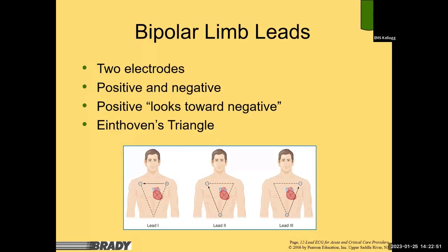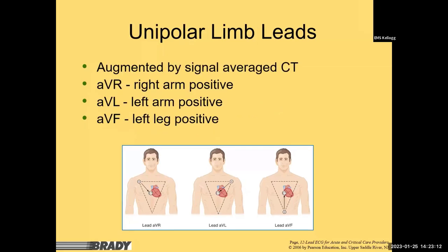If the heart's electrical conduction system is traveling towards a positive lead — towards the camera — we see a positive spike from the isoelectric line. If the electrical conduction system is traveling away from the positive lead or away from the camera, you would see a negative deflection on the EKG.